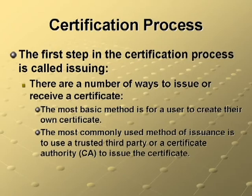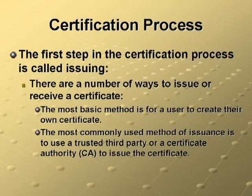The first step in the certificate process is called issuing, and there are a number of ways to issue or receive a certificate. The most basic method is for a user to create their own certificate — for example, using a tool called Digital Certificate for VBA Projects in Microsoft Office. One of the most commonly used methods of issuance is to use a trusted third party, like VeriSign, or a certificate authority to issue the certificate.